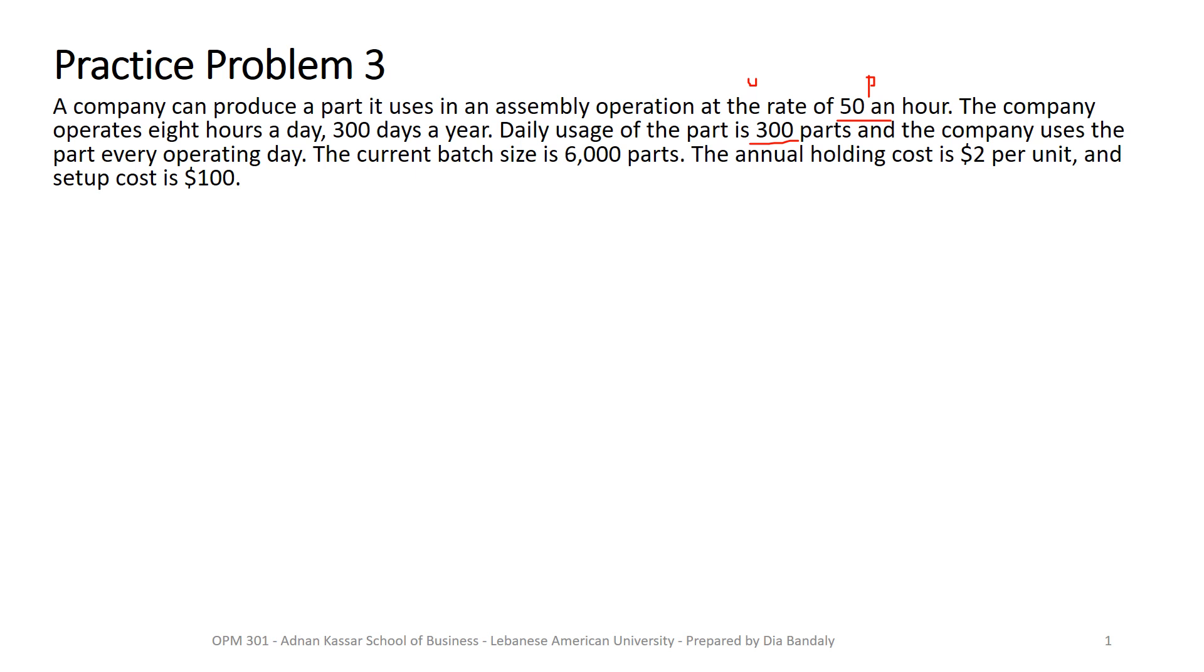The current batch size is 6,000. This is their production quantity. It's given to us, so they are not asking us to find it for them. They want to use that batch size. Annual holding cost is $2 per unit. So this is our h, small h. And the setup cost is $100. So that's capital S.